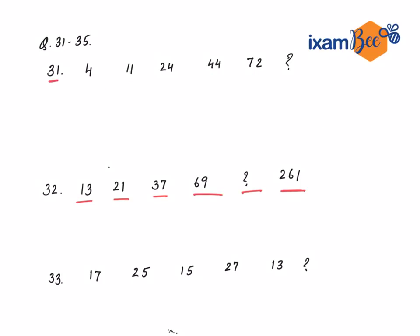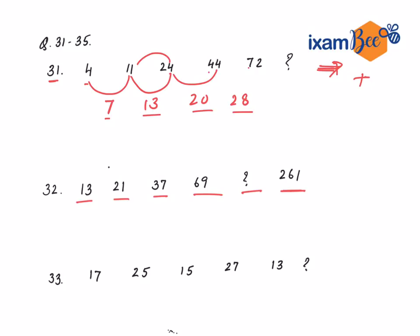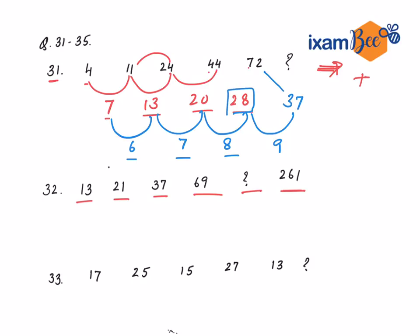Now we come to question number 31. The series is increasing but not very quickly, so it will be plus. We see the differences: 4 to 11 is 7, then 13, then 20, then 28. The second differences are 6, 7, 8 — so the next second difference should be 9. Adding 9 to 28 gives 37. Then 72 plus 37 is 109. So 109 is your answer.